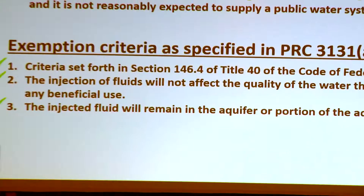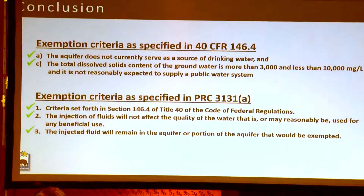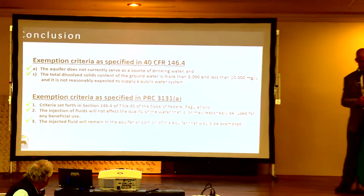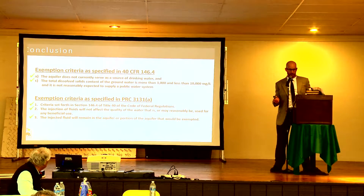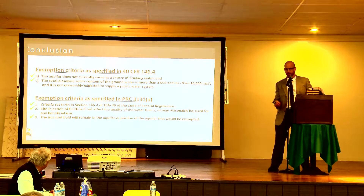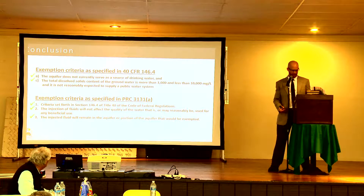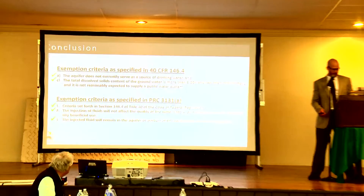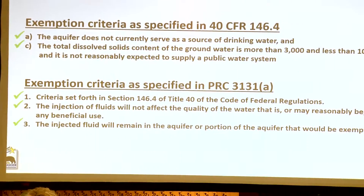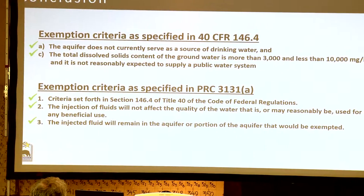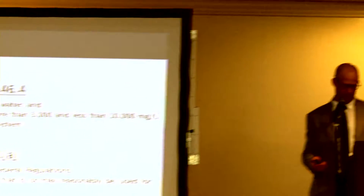Based on all of that, the state is confident in saying that the exemption criteria established by the federal government has been met. Specifically: the aquifer does not currently serve as a source of drinking water; the total dissolved solids content is more than 3,000 and less than 10,000; and it is not reasonably expected to supply a public water system. Additionally, the Division of Oil and Gas, with preliminary concurrence from the State Water Resources Control Board, is comfortable stating that the criteria established in Public Resources Code 3131A has been met — that injection of fluids will not affect the quality of water that is or may reasonably be used for any beneficial use, and that the injected fluid will remain in the aquifer or portion of the aquifer that would be exempted.